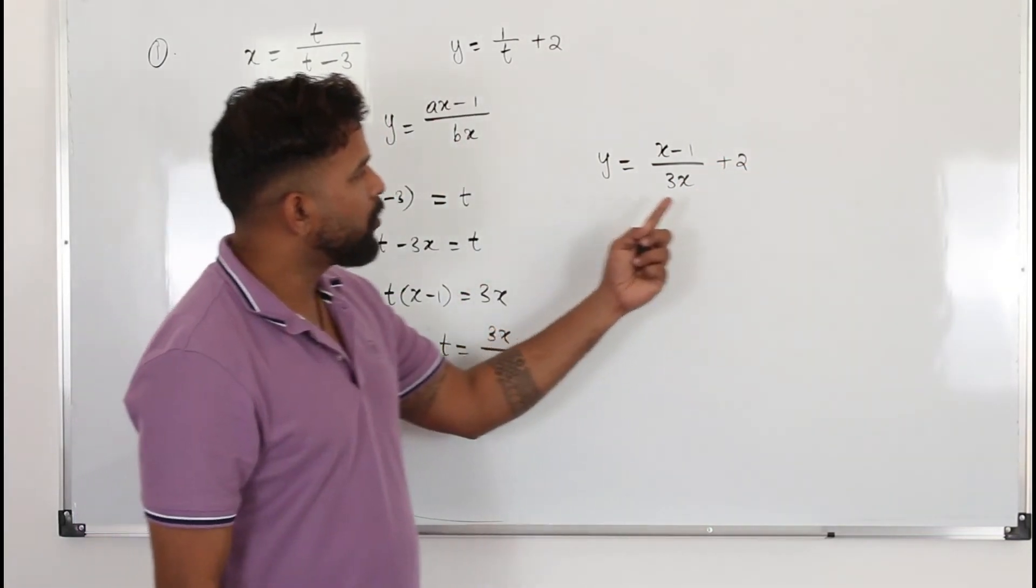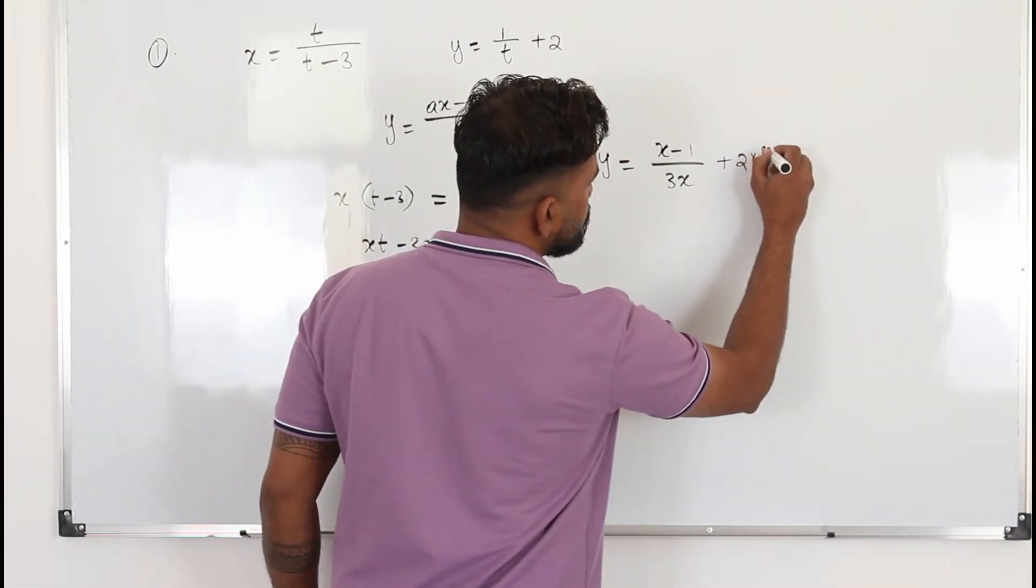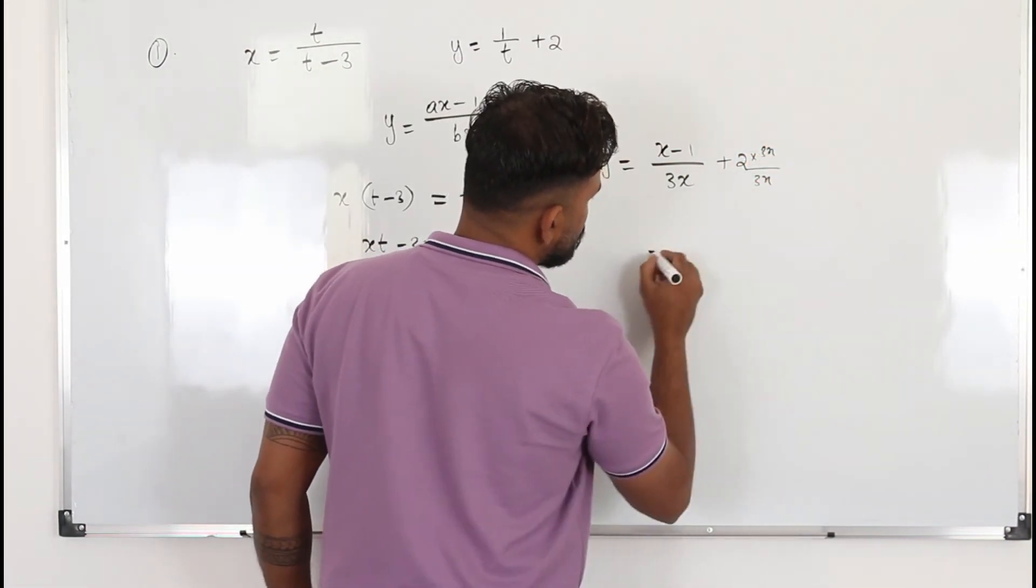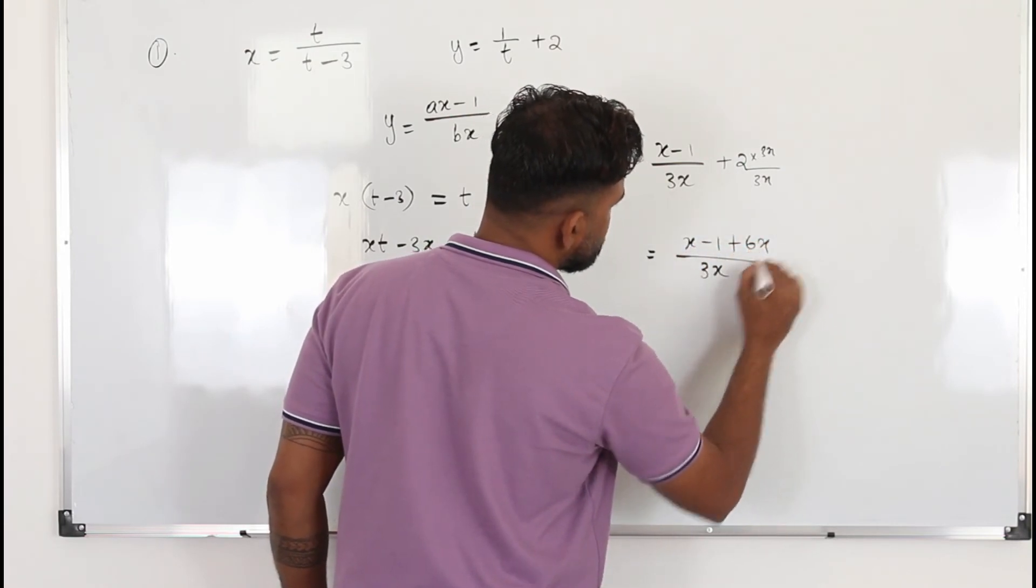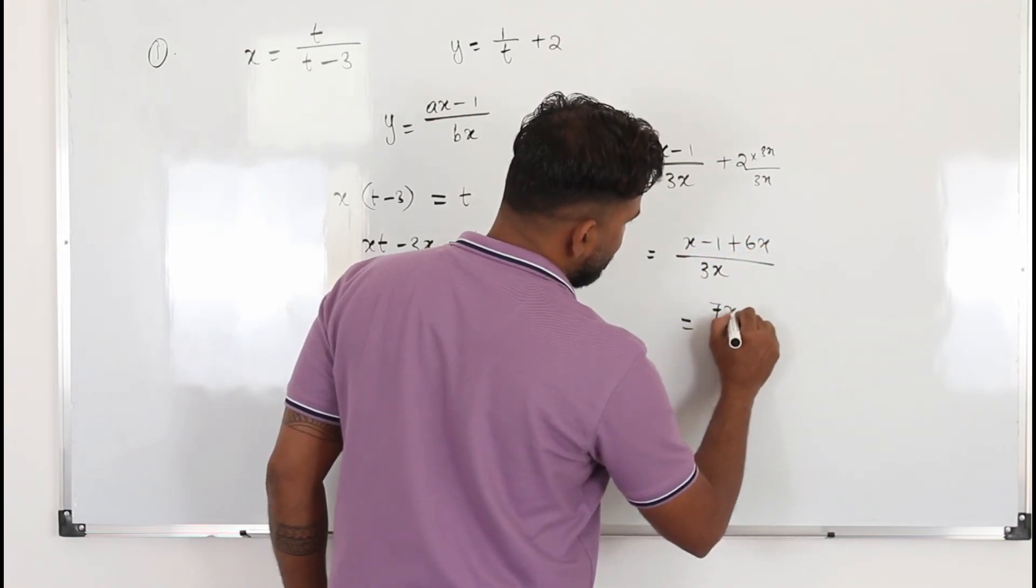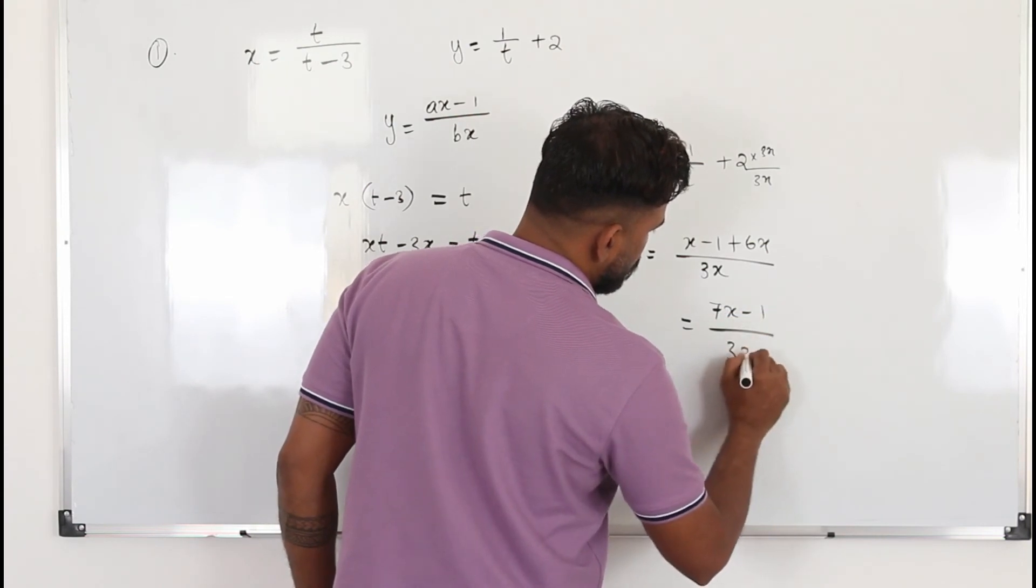To make it as a common denominator, multiply and divide this by 3x. So 3x is going to be the common denominator. You have x minus 1 plus 6x, which is going to be 7x minus 1 over 3x.